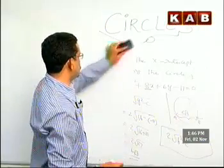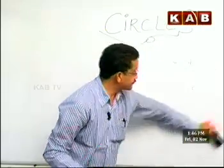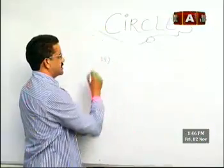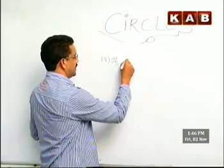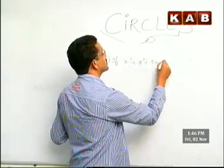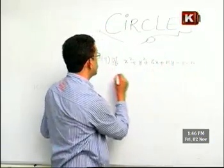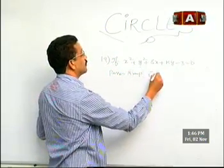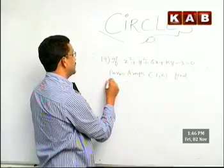Now let me work out the 19th question. 19th very short answer question. If x² + y² + 8x + ky - 3 = 0 passes through (1, 2), find its radius.